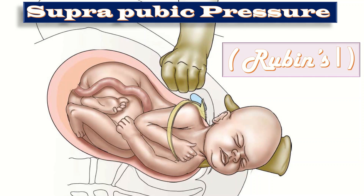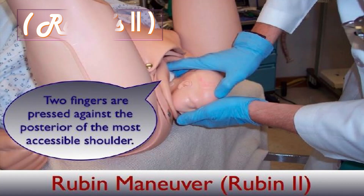If that fails, I will go for rotational maneuvers to get the anterior shoulder into the pelvis. Next comes Rubin's 2, in which I insert one hand into the vagina, feel the anterior shoulder, and place two fingers on the posterior aspect of the anterior shoulder. This promotes adduction of the shoulder, resulting in a smaller transverse diameter across the shoulders.